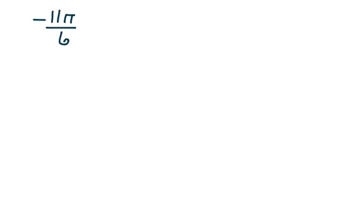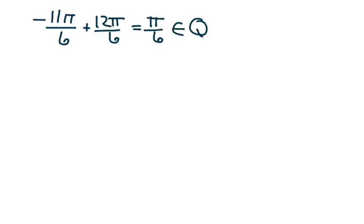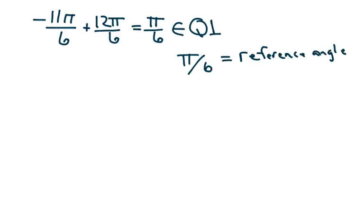The next example is negative 11 pi over 6. I add 12 pi over 6 to get a coterminal angle: negative 11 pi over 6 plus 12 pi over 6 gives pi over 6. Pi over 6 belongs to quadrant 1, so pi over 6 is my reference angle.